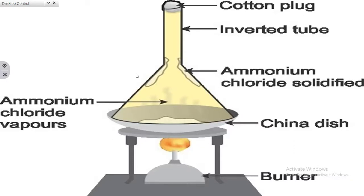The following diagram shows the experimental setup of sublimation. It requires a china dish, inverted tube, cotton plug, stand, and burner. First, the ammonium chloride and salt mixture is taken in the china dish. When heated, ammonium chloride starts to vaporize and gets settled at the sides of the tube. The cotton plug prevents the escape of ammonium chloride. After sublimation, we get ammonium chloride in the inverted tube and salt remaining in the china dish.